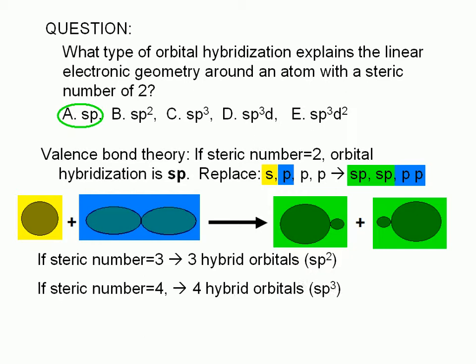Similarly, a steric number of 4 is explained by assuming that an S orbital and three P orbitals hybridize to form four hybrid orbitals. The hybrid orbitals are called SP3 orbitals, and their regions of high electron density are oriented towards the corners of a tetrahedron. That is, they are 109.5 degrees apart.